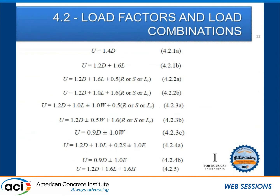In terms of load combinations, the manual has the same formulas. IBC promoted ASCE 7, and ACI adopted those factors and load combinations for building design. For those with gray hair like me, you remember the multiplication factors were different some time ago — 1.4 for dead loads and 1.7 for live loads. That has been made consistent with the other codes, and the phi factors are adjusted to maintain the same level of safety.